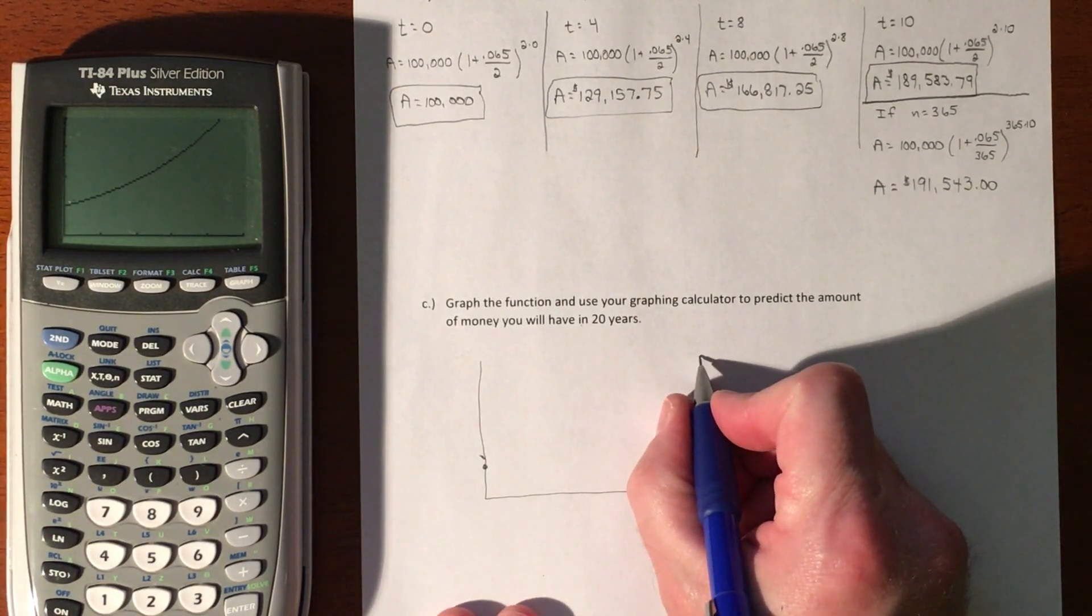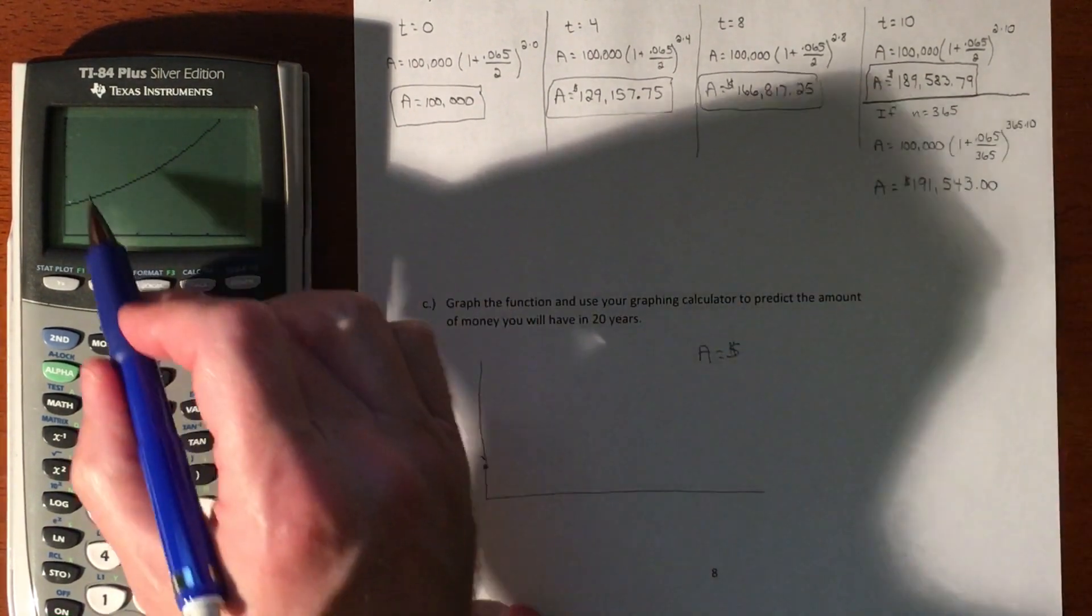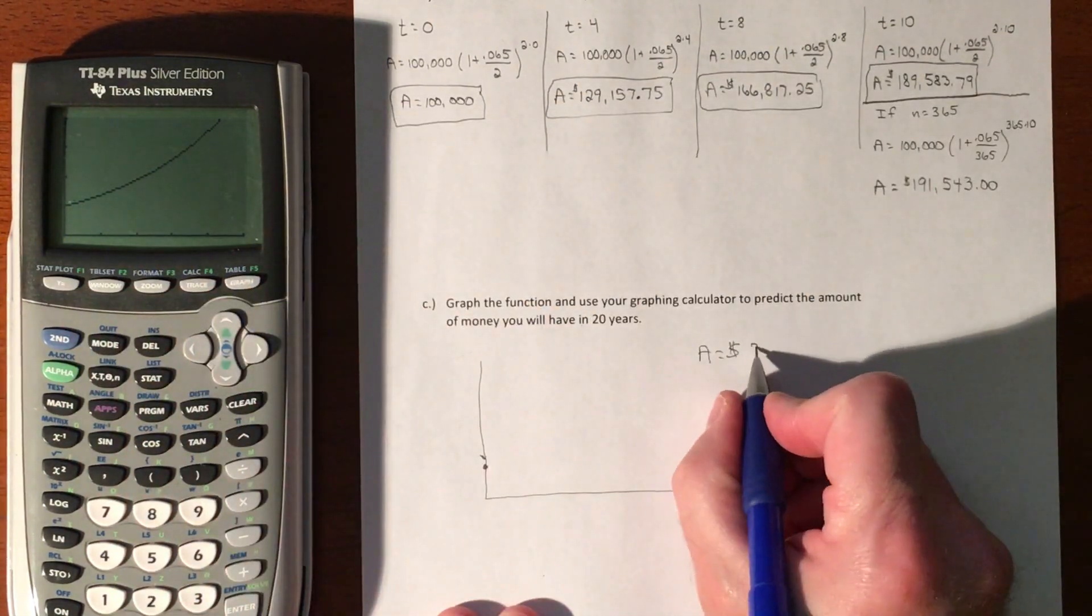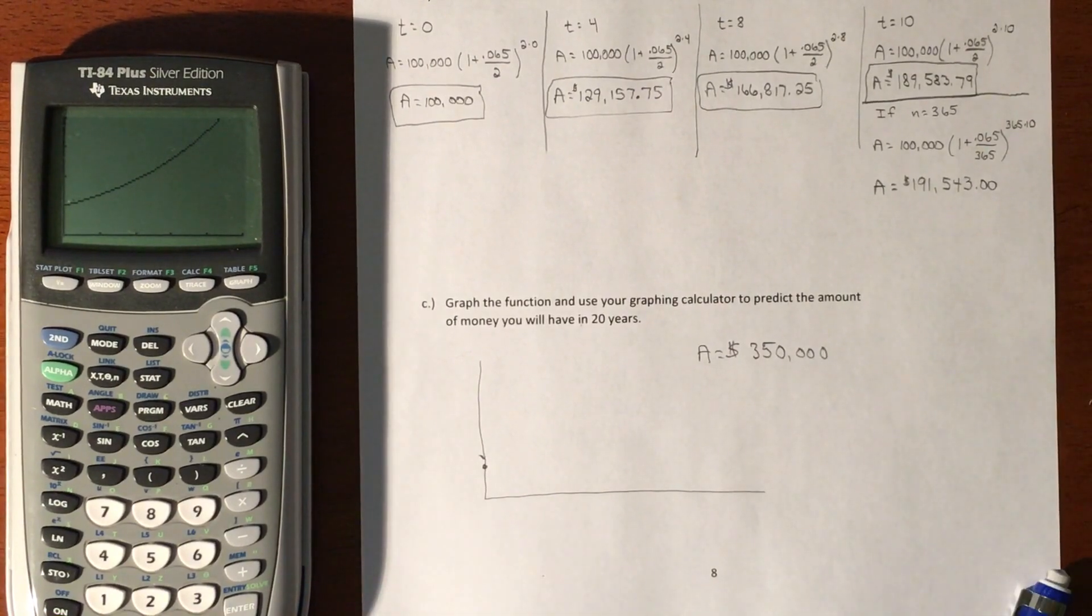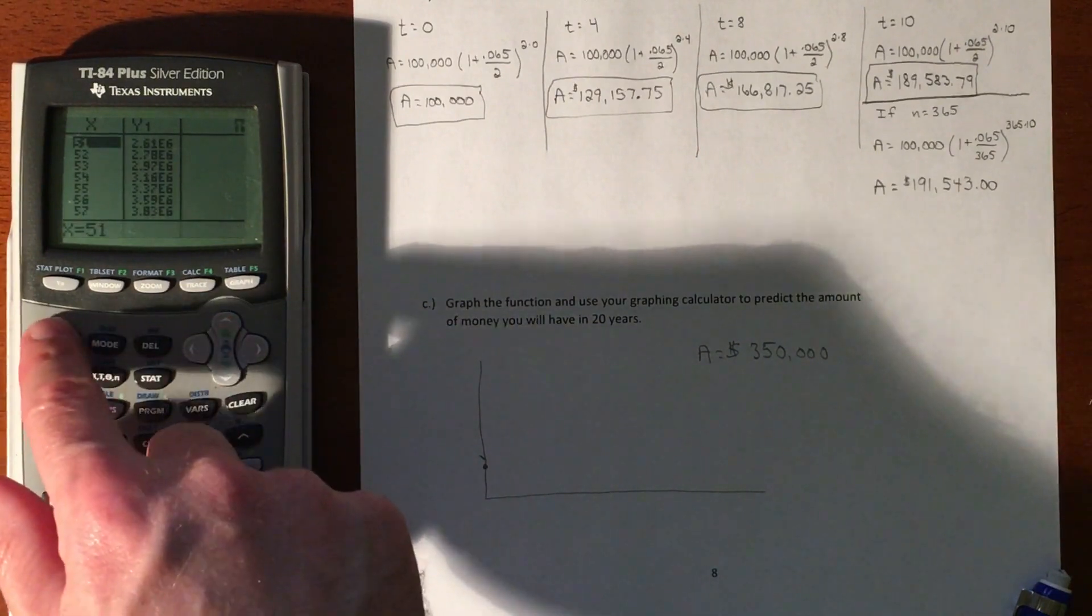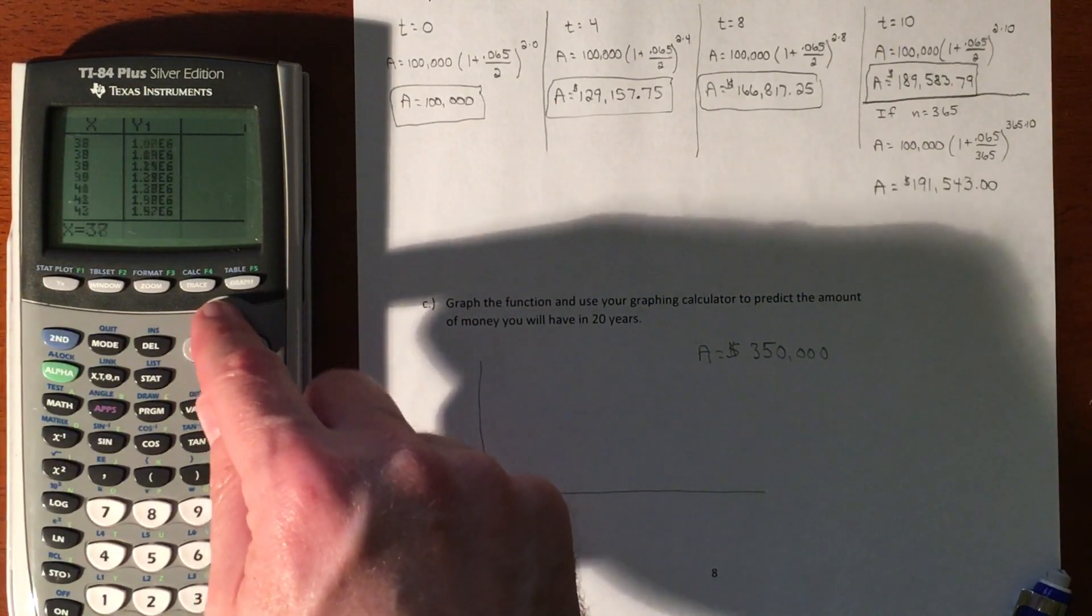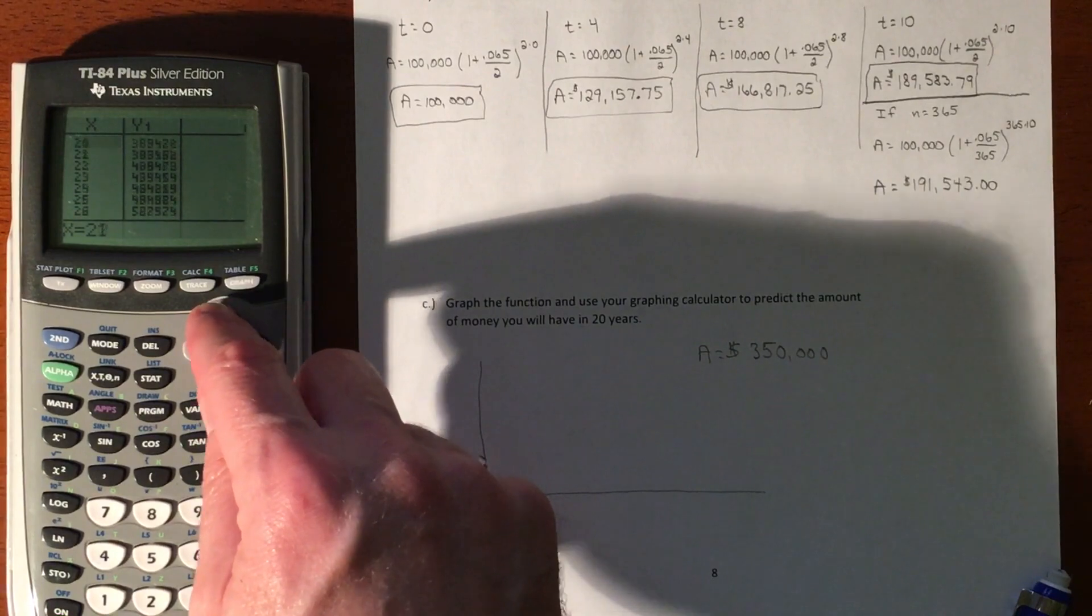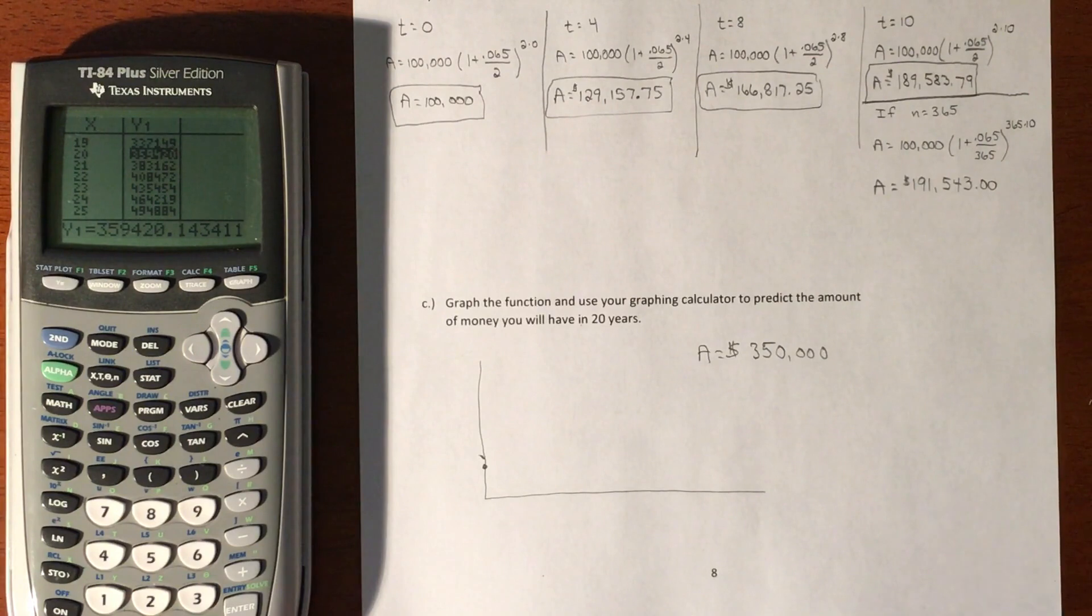Our value in 20 years is—I don't know—maybe $350,000-ish? If you really wanted to find out, you can just plug it in the calculator or go to your table and go to 20 years. It's going to tell you exactly how much money it would be. Our guess is $350,000-ish, and it says $359,000, so not bad.